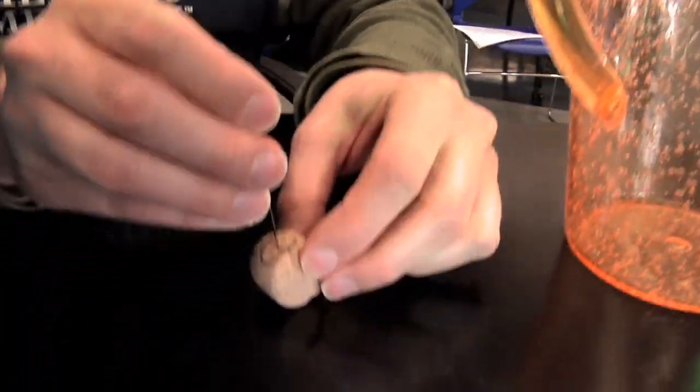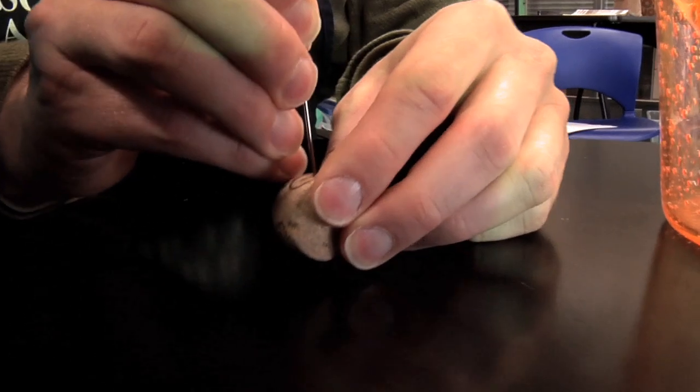The next part is simple. Just push the sharp end of the needle through your cork. Be sure to push it into the rounded part of the cork, not the flat part.